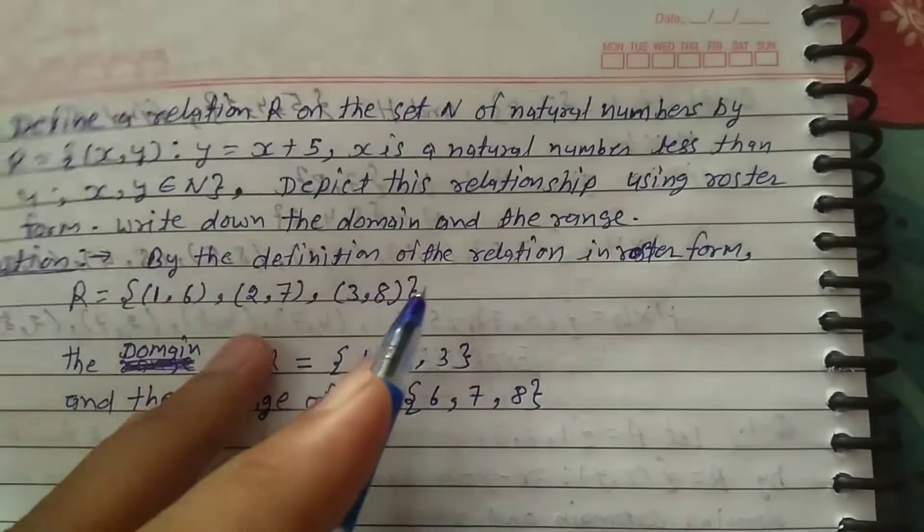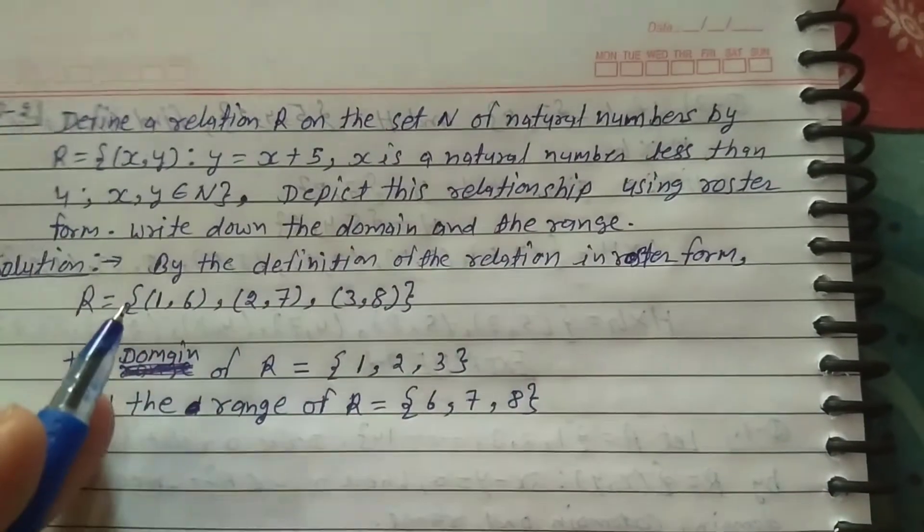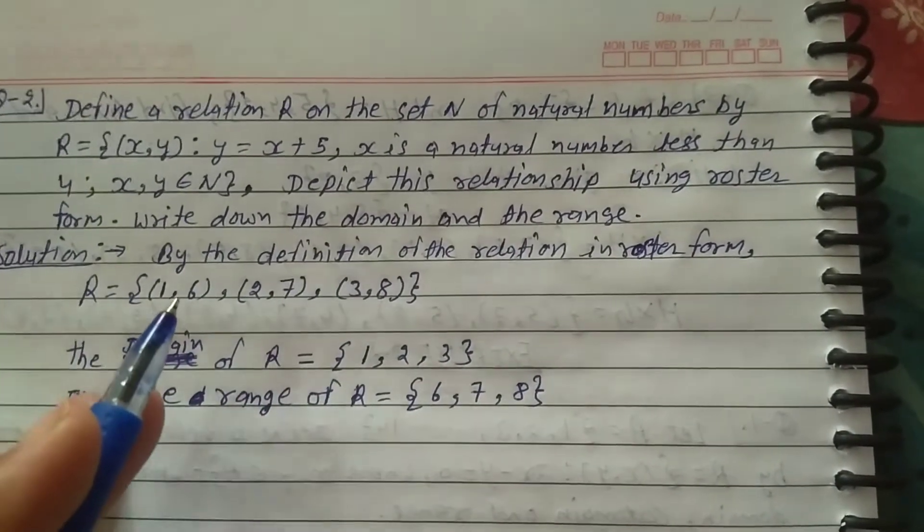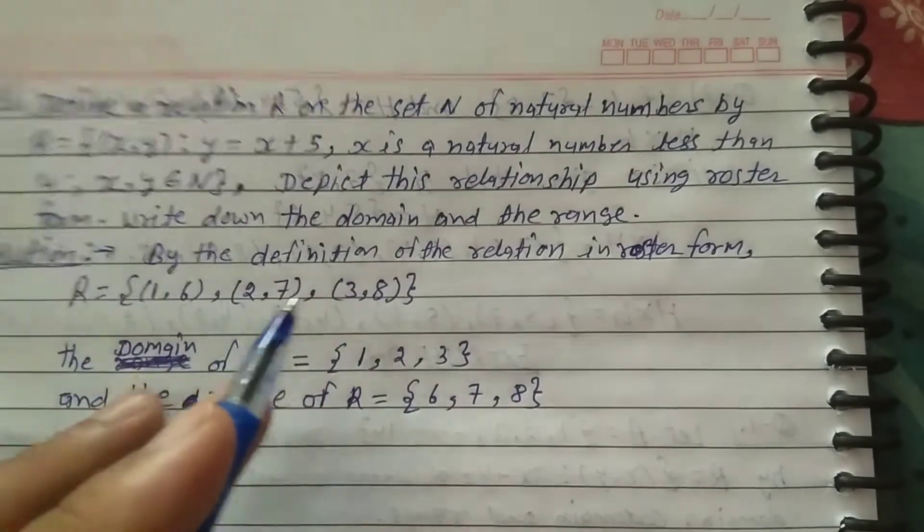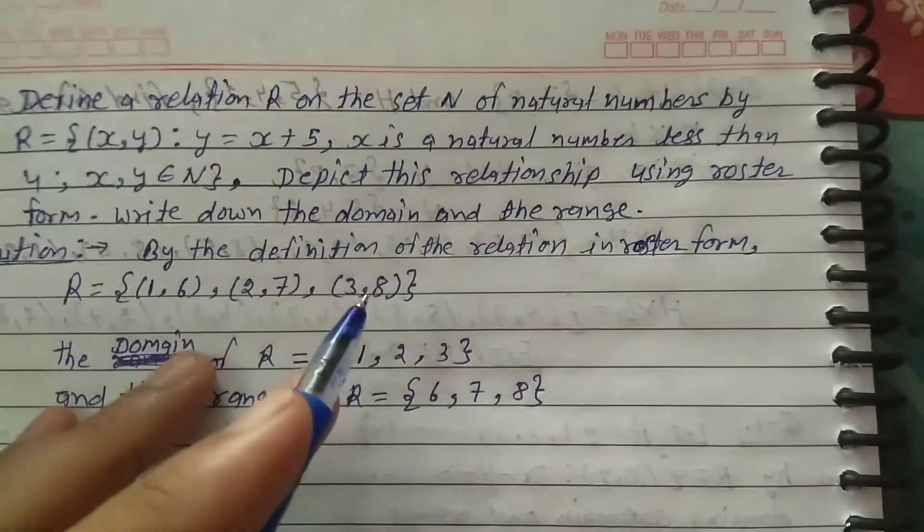By the definition of the relation in roster form, R = {(1,6), (2,7), (3,8)}.